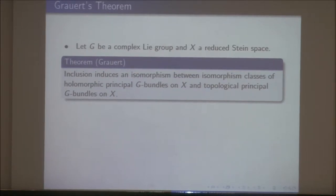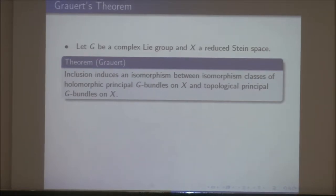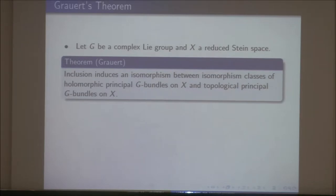In other words, every topological principal G-bundle on X has a holomorphic structure, and two holomorphic structures are holomorphically isomorphic if and only if you can find a topological isomorphism between the two principal bundles. This is the famous theorem of Grauert from the late 1950s.